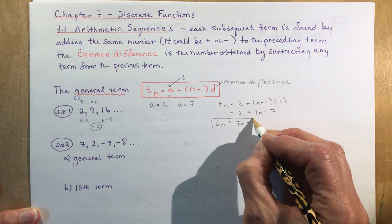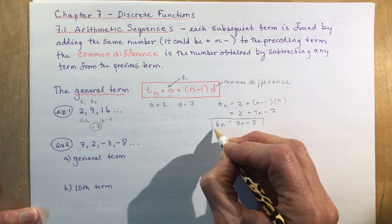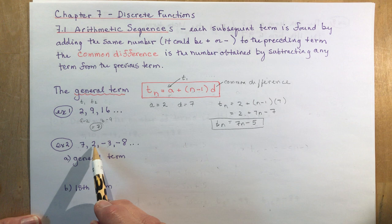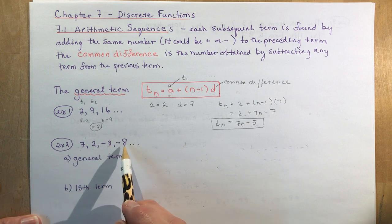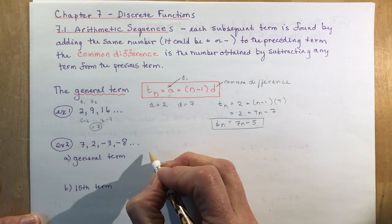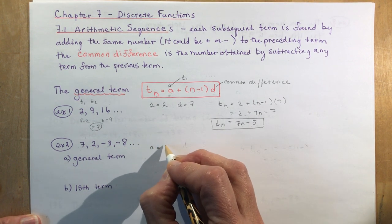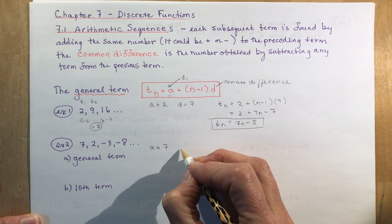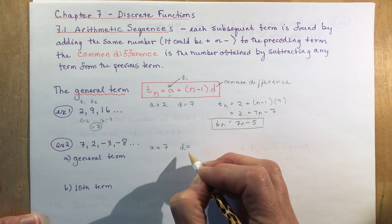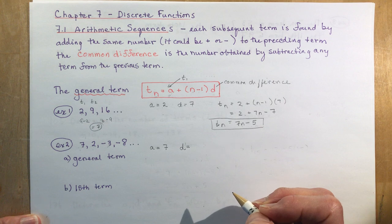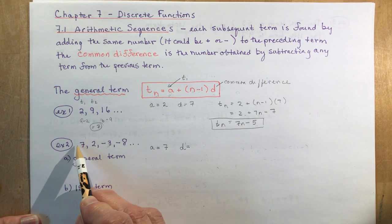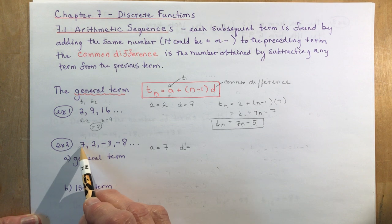For the second example: 7, 2, −3, −8. What is a? That's easy — a is the first term, 7. What is the common difference, our d value? You have to figure out what you did to go from one term to the next.